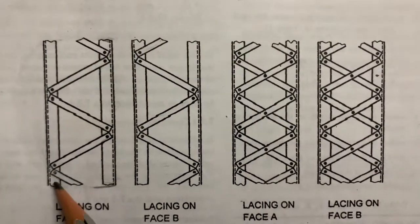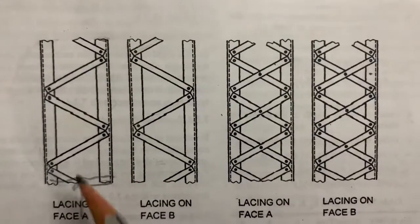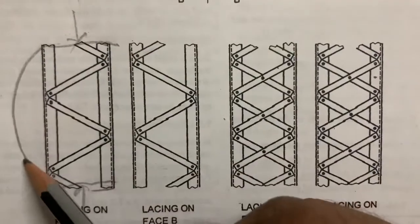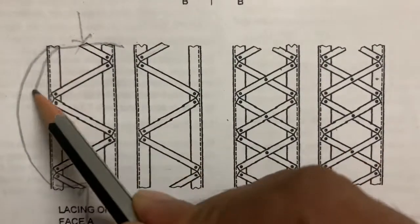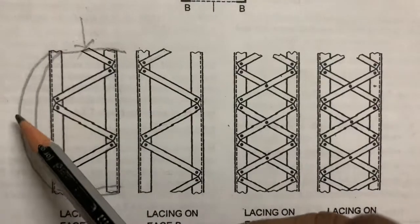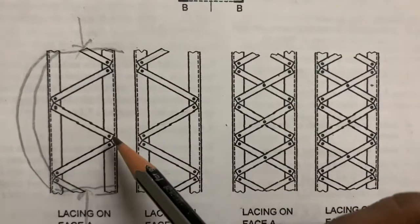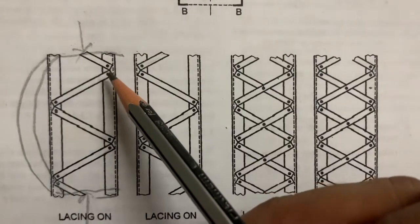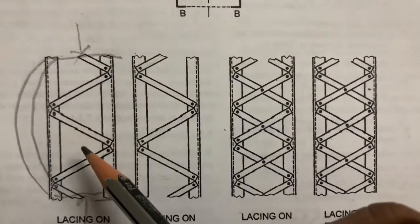If we apply load in this direction, this member will buckle like this. The main purpose of the lacing is to avoid this buckling. These lacing flats are connected by using bolting, welding, or riveting to avoid this buckling.